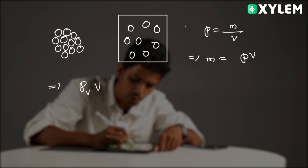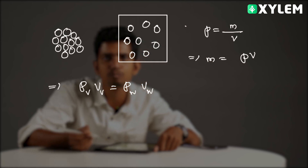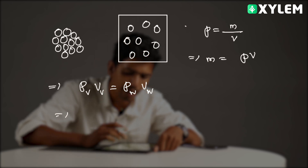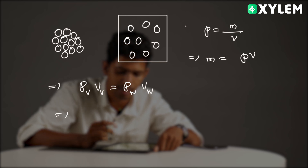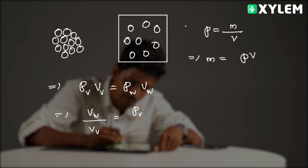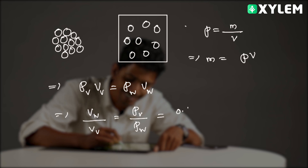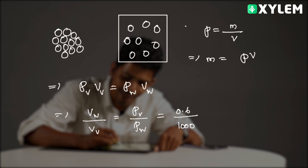Density of water vapor multiplied by volume of water vapor is equal to density of water multiplied by volume of water. Therefore, the ratio of volume of water to volume of vapor equals density of vapor divided by density of water. Density of vapor is given as 0.6, and density of water is 1000. So the answer is 6 into 10 raised to minus 4.